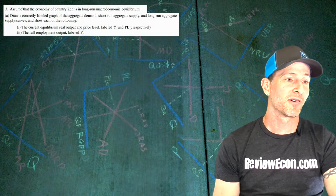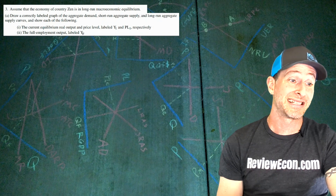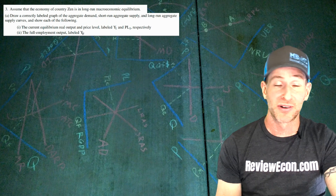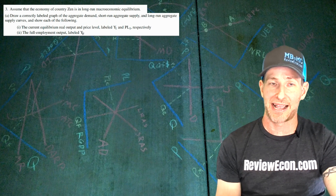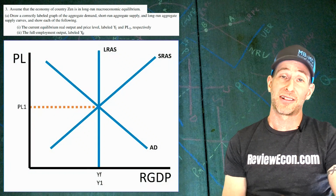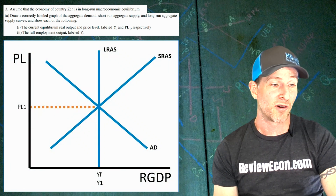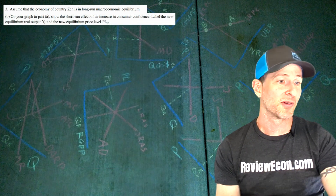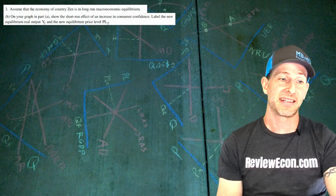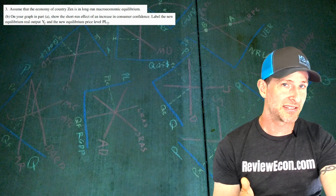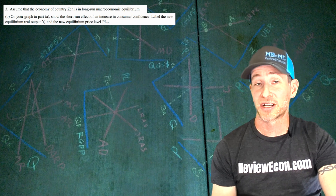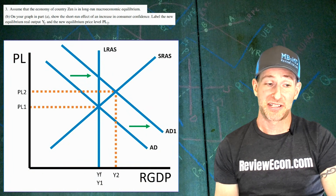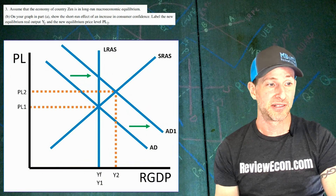Question 3: Assuming the economy of country ZEN is in long-run equilibrium, we draw a correctly labeled AS-AD model graph marking the current level of output, price level, and full employment level of output. YF and Y1 are equal, with PL1 marked at the current equilibrium. For Part B, showing the effect of an increase in consumer confidence: when consumers are more confident, consumer spending increases, shifting aggregate demand to the right, raising the price level and increasing output to Y2.